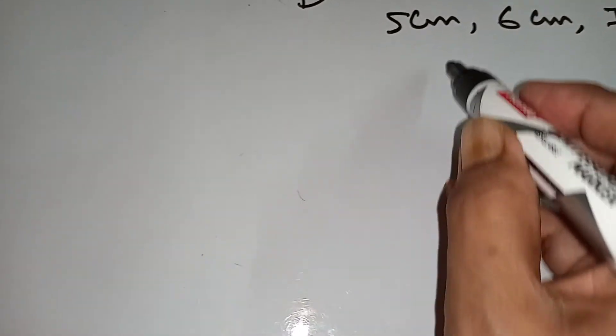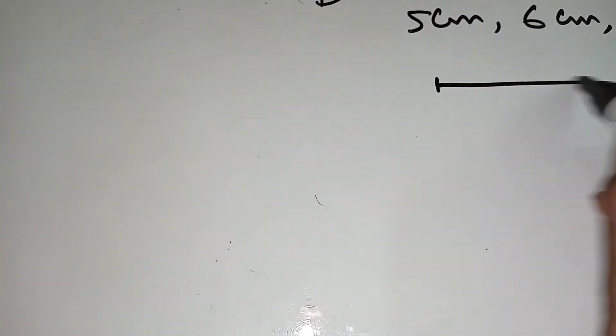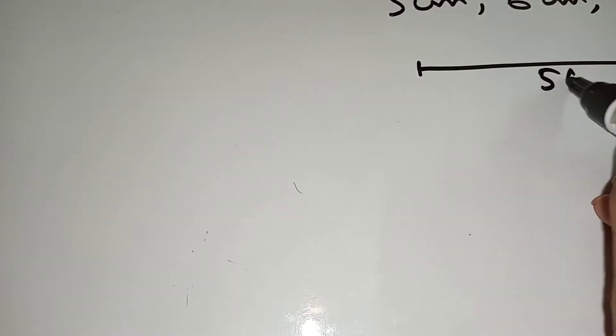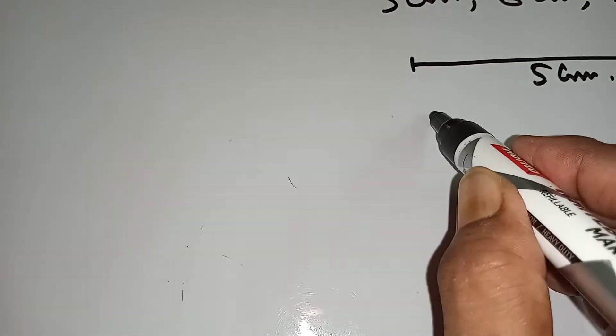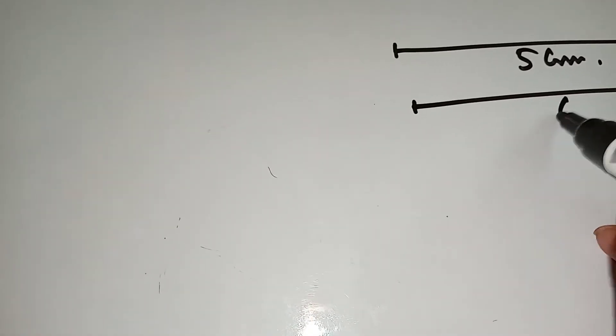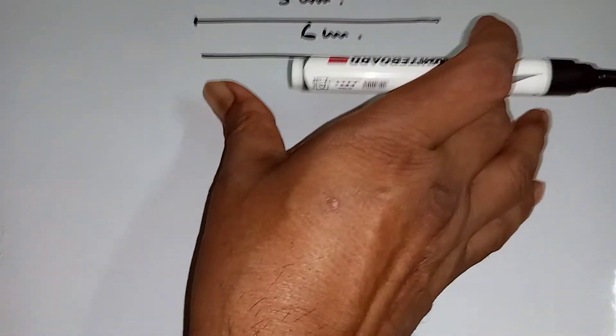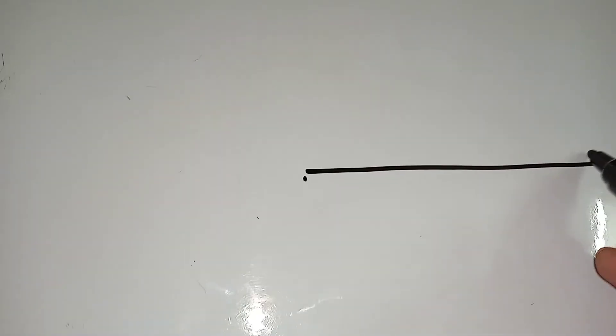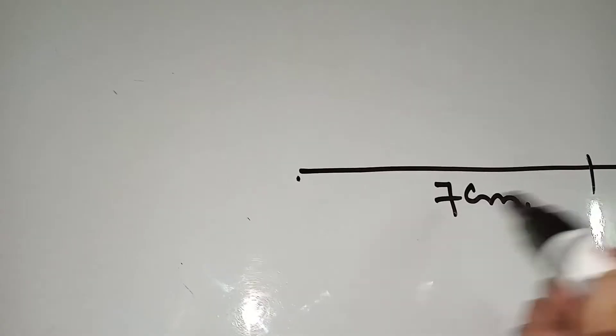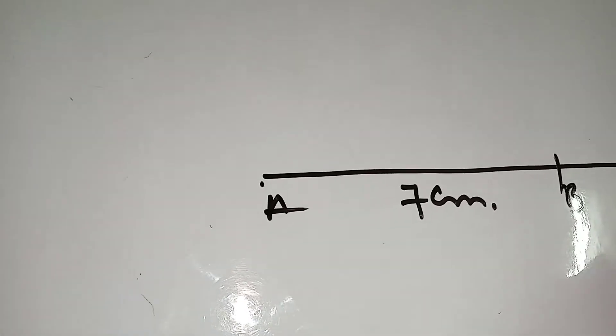At first, draw the line. This is five centimeters, this is six centimeters, this is seven centimeters. Draw a triangle with the three given sides. Take the measurement, put here and cut here. This is seven centimeters. This is A, B, C.